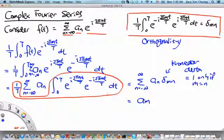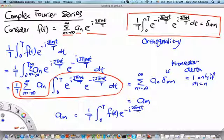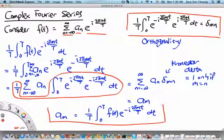So let me write this again. a_m equals 1 over T, the integral from 0 to T of f(t) times e^(-i 2π mt/T) dt. This formula here would allow us to evaluate all the complex Fourier coefficients of the periodic function f(t). It is as simple as this.